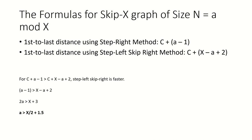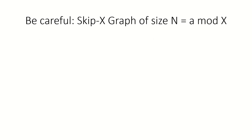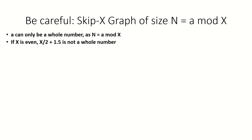And when a is less than x over 2 plus 1.5, the first method — just stepping right until we get to the last vertex from the 1 mod x vertex — is faster. Be careful: a can only be a whole number as n is a whole number and x is a whole number, and we define a to be the remainder when n is divided by x.